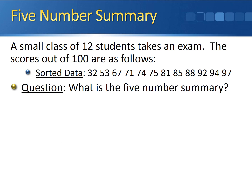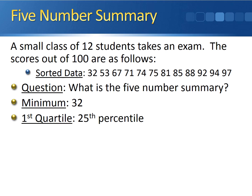Taking our example of a small class of 12 students and their exam scores, we have our sorted data already and want to find the five-number summary. The minimum is just the smallest observation — looking at the sorted data, 32 is the smallest, so 32 is the minimum. For the first quartile, which is the 25th percentile, the location is 12 plus 1 times 25 divided by 100, which gives us 3.25.